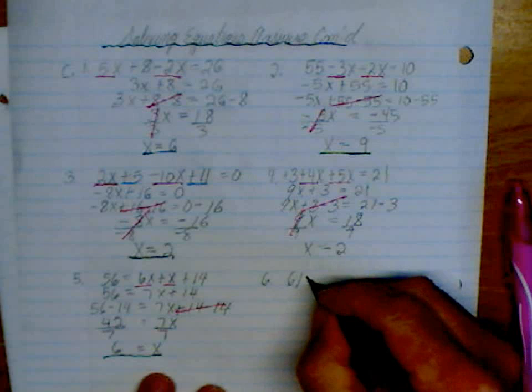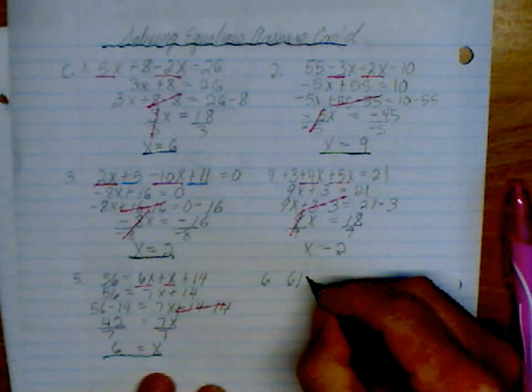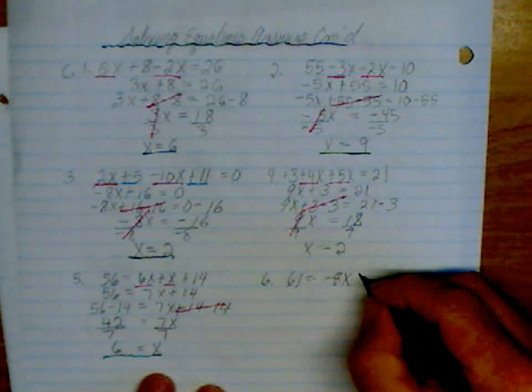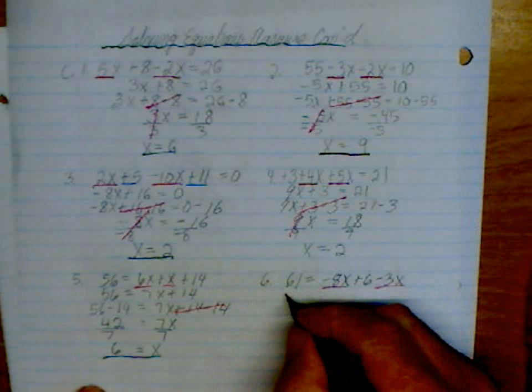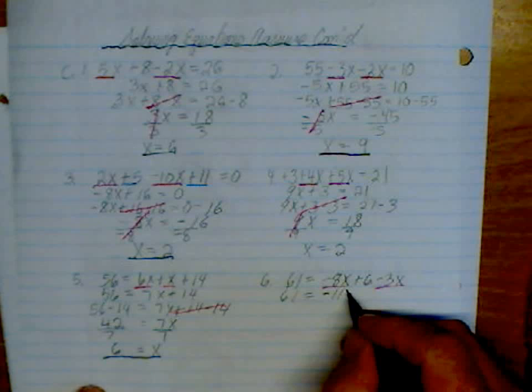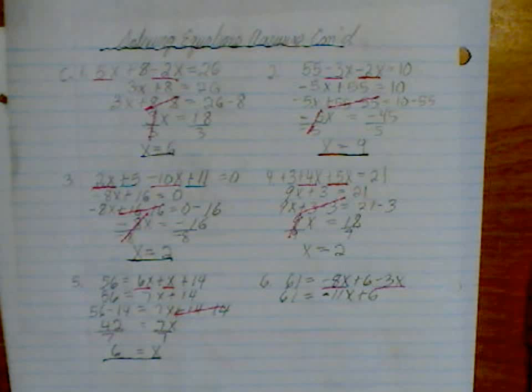Number 6. 61 is equal to negative 8x plus 6 minus 3x. Those are our like terms. So they're both negative. So this is going to be negative 11x plus 6. And we're going to have to minus 6 from both sides.